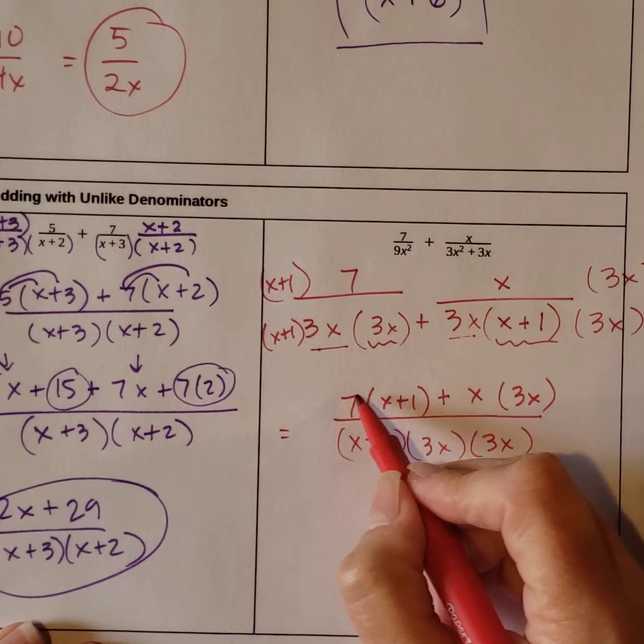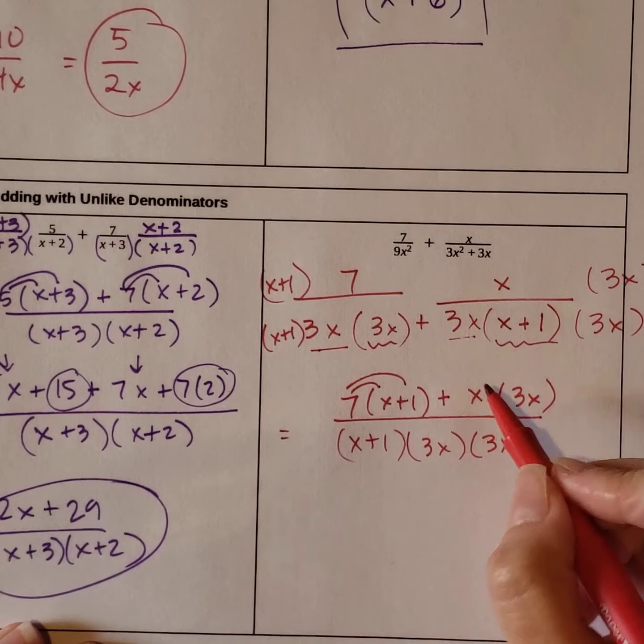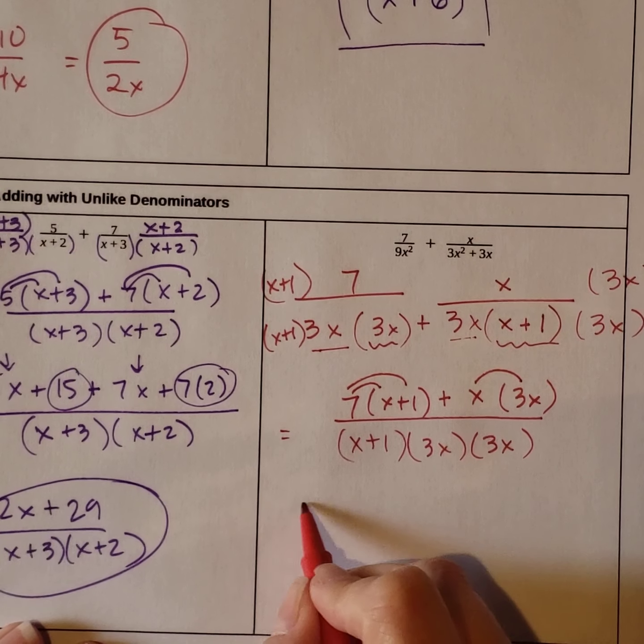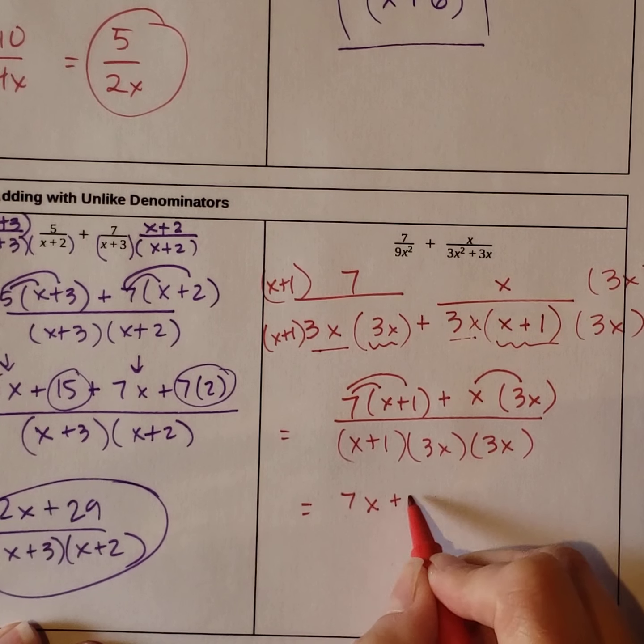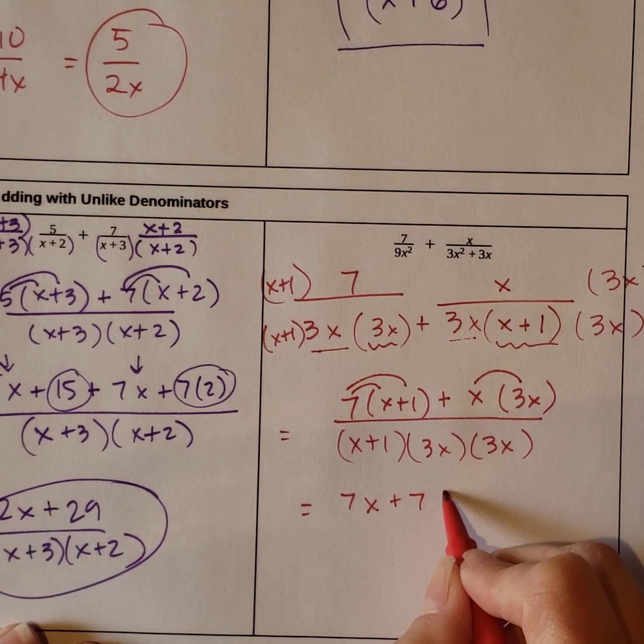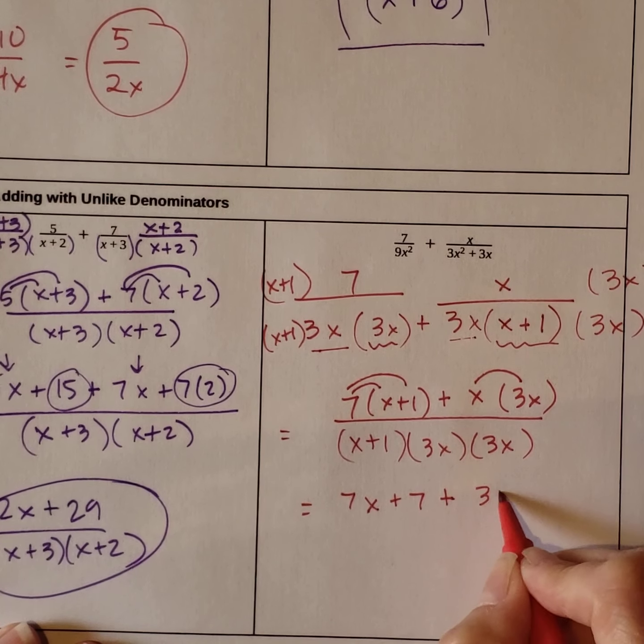So distribute. 7 goes to the x and the 1. This x goes to the 3x. So we have 7x plus 7 plus 3x squared.